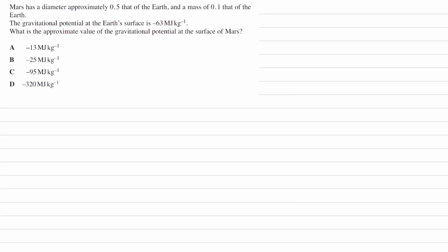Mars has a diameter approximately 0.5 that of Earth and a mass of 0.1 that of Earth. The gravitational potential at Earth's surface is given and we're trying to work out the gravitational potential at the surface of Mars. Gravitational potential is equal to minus GM over r. That's what we're going to be considering.